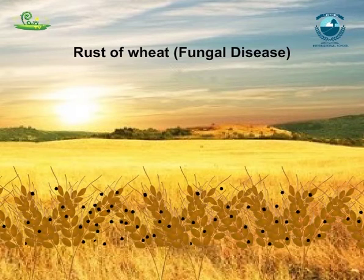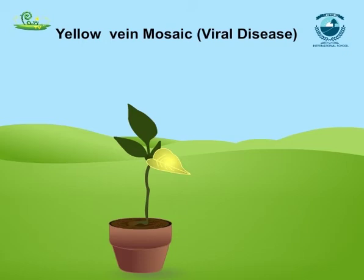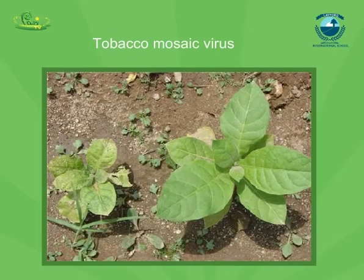Yellow vein mosaic of okra results in the yellowing of the veinal area of the leaves. In severe cases, the complete leaf becomes yellow, and fruits of the infected plant also become small and yellowish-green. This disease is caused by a virus and spreads by means of insects. Blight disease of potato is a fungal disease in which the potato tuber gets destroyed and leaves are dotted with brown spots. Tobacco mosaic virus (TMV) attacks the tobacco plant and can be controlled by the use of certain chemicals that kill the microbes.